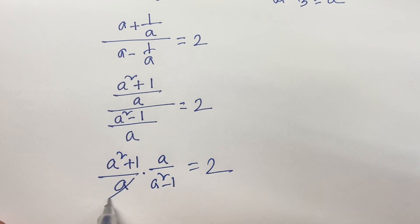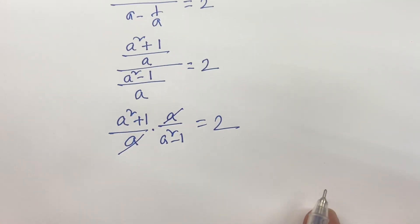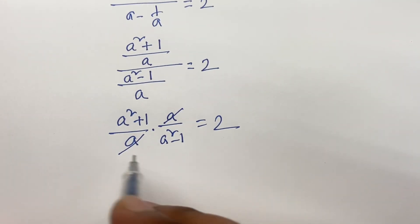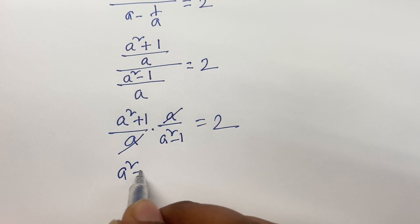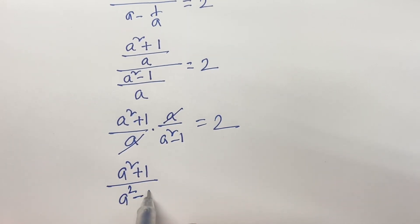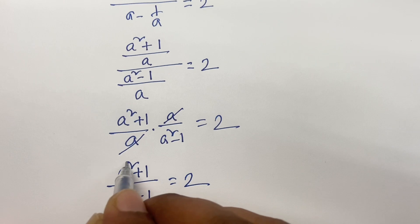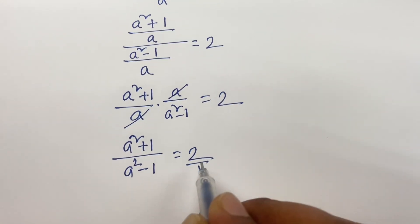After cancellation, we can say a squared plus 1 over a squared minus 1 is equal to 2.